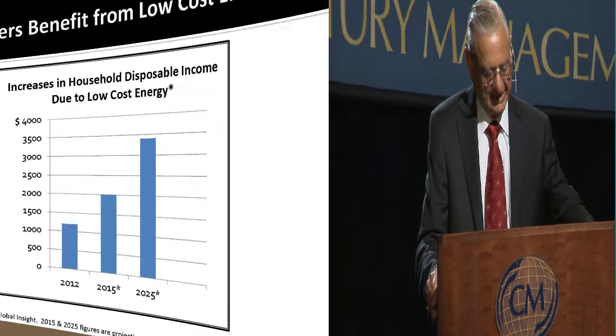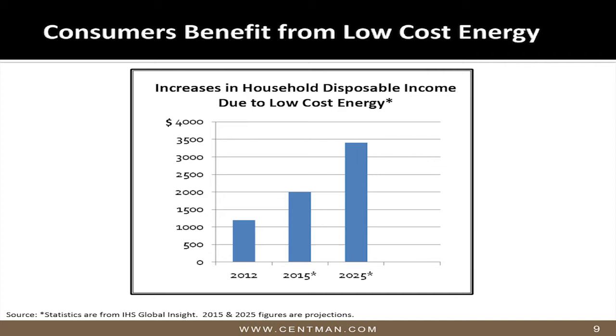Let me give you the bottom line of how it affects you as an individual consumer. A company called Global Insights, which does research all over the world, concluded that in 2012 you reduced your cost in your personal budget by $1,200 after taxes and inflation — basically a tax cut. In 2015, they're projecting it'll save the average consumer $2,000 a year, and by 2025, up to $3,400. This is something the government cannot do for you, and it is the benefit of the free enterprise system and technology.